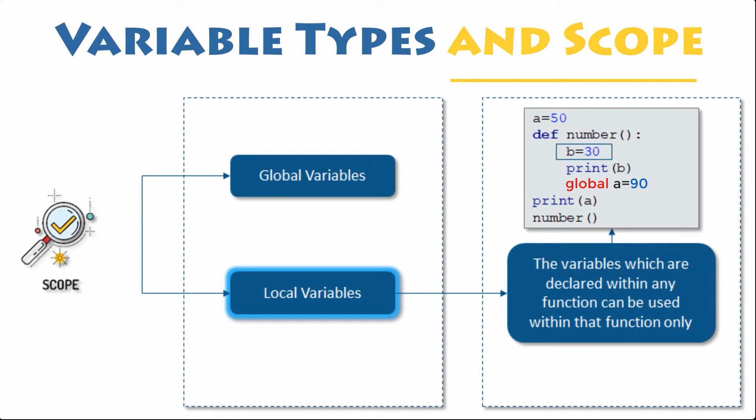Thus, in order to create a global variable inside a function, you can use the global reserved keyword. Also, use the global keyword if you want to change a global variable inside a function that was declared outside.